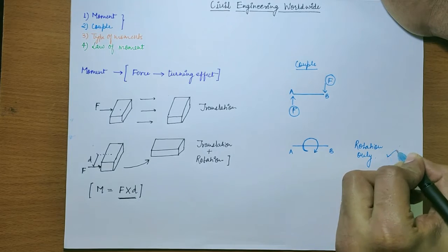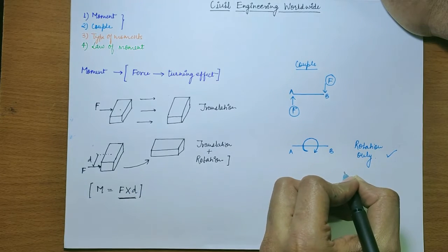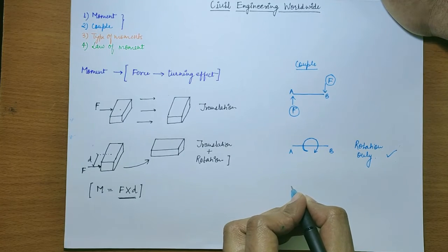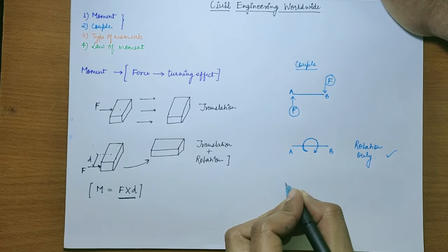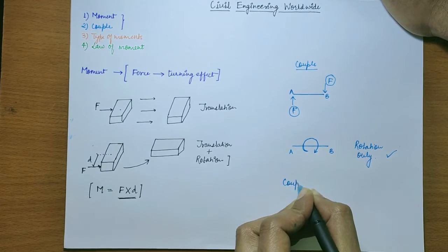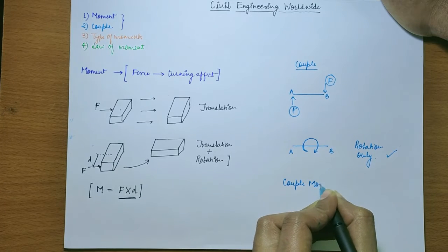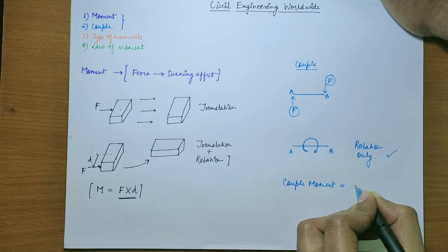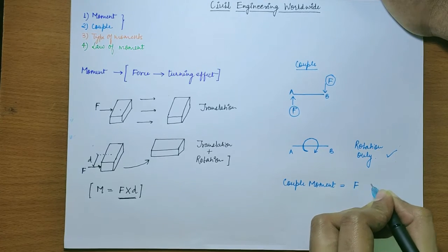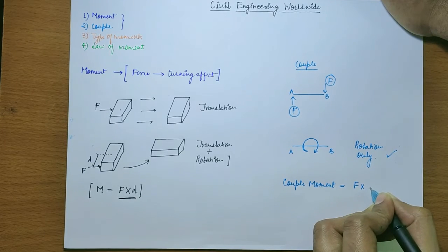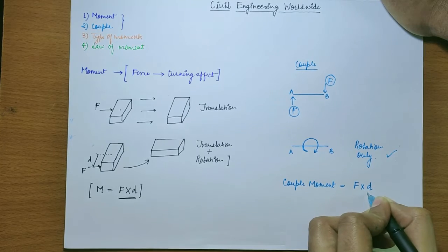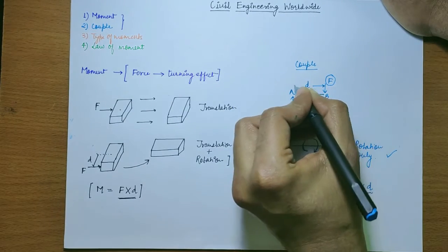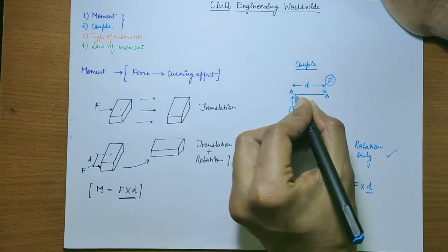So this is the difference between a couple and a moment. And how we calculate the magnitude of a couple? Magnitude of a couple or we say a couple moment is defined as the force into the distance separating them. Here, the D is the distance between the two equal and opposite forces acting on a body.